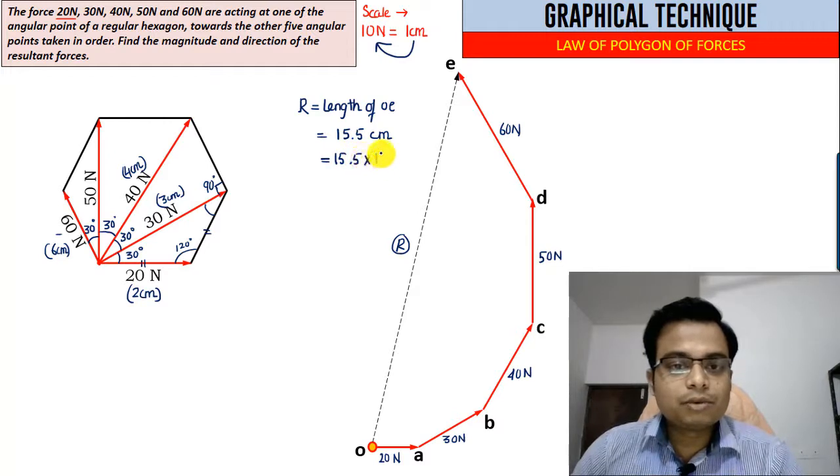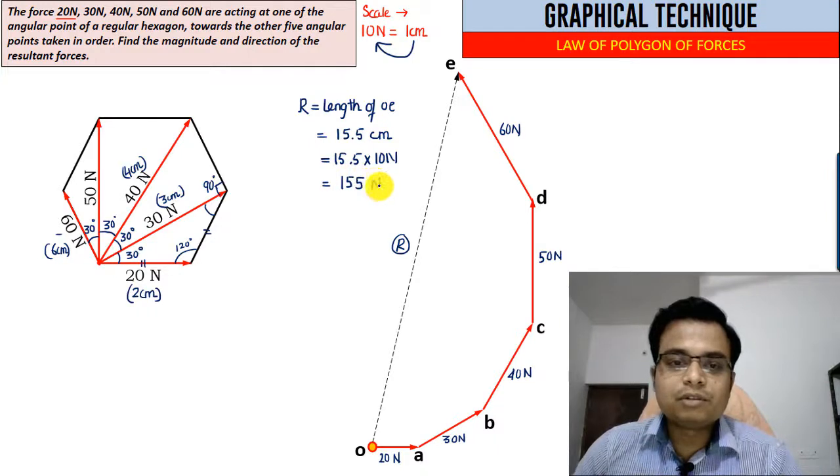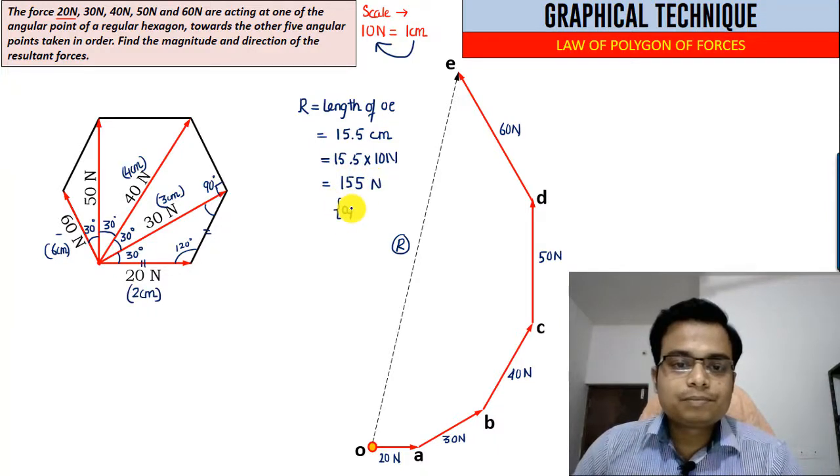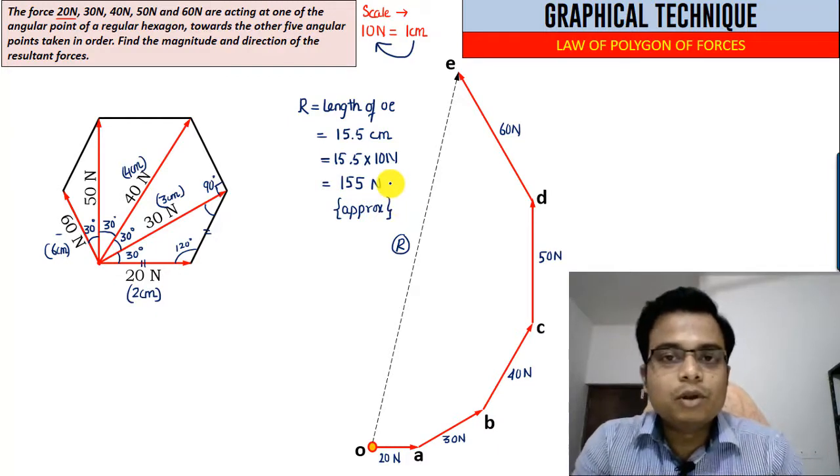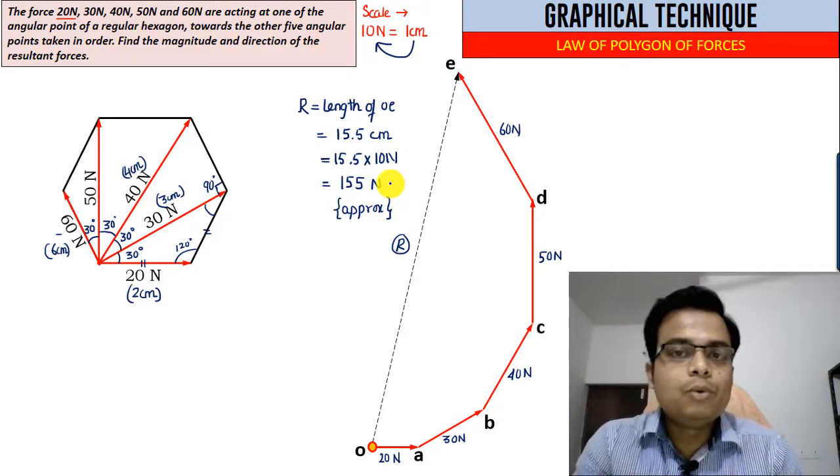This is going to be written as 15 times 10 Newtons, so essentially this can be written as 155 Newtons. This is an approximate value because this is a graphical technique. You cannot get the absolute value; you are bound to get some error.